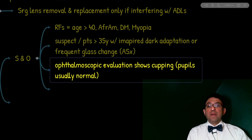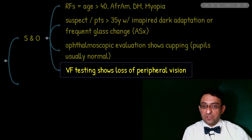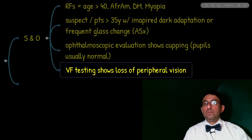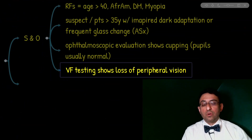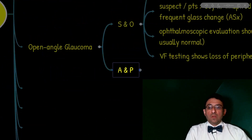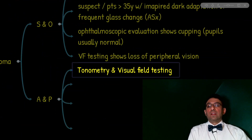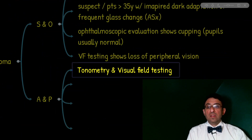Visual field testing is mandatory for such patients, and it shows loss of peripheral vision. The most important differential diagnosis of chronic loss of peripheral vision — also referred to as tunnel vision — is chronic or open-angle glaucoma. After ophthalmoscopic evaluation, the workup needed in patients with symptoms of open-angle glaucoma includes visual field testing and tonometry.